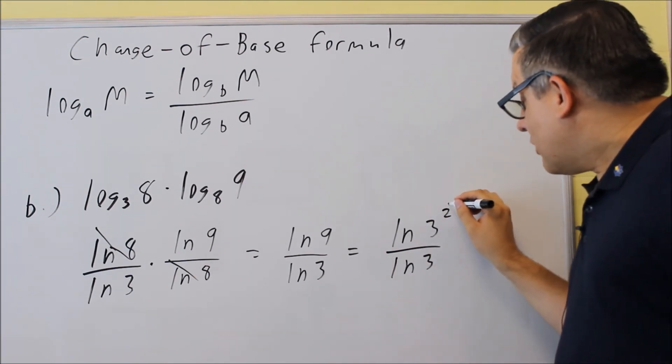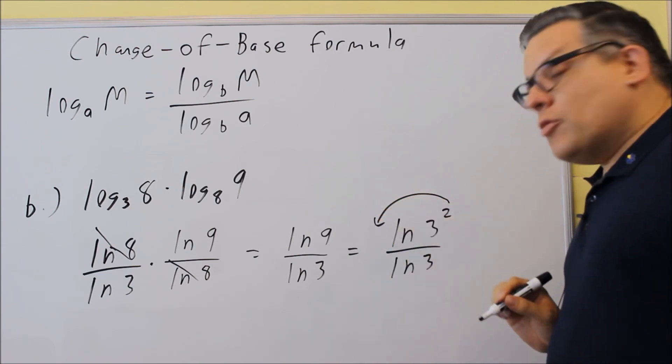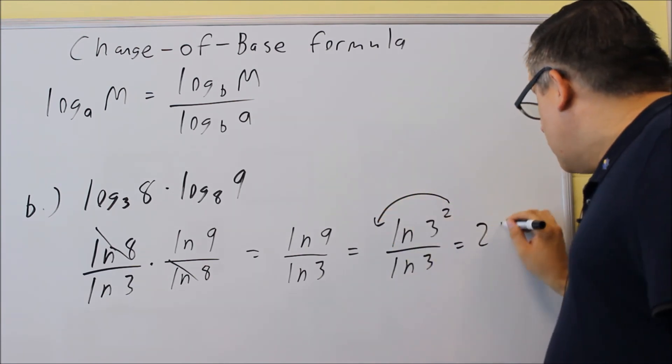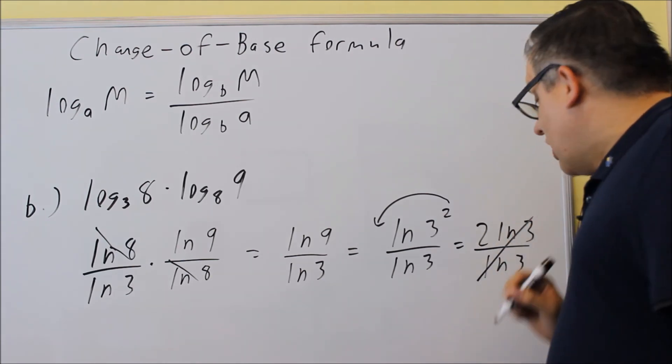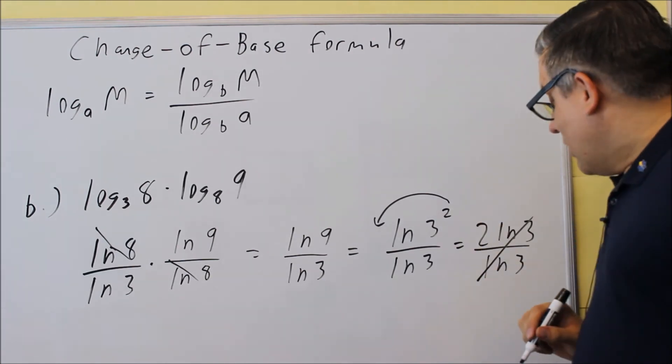My log properties say that I can take this exponent and I can move that down in front. So I get 2 natural log of 3 and I have natural log of 3 on the bottom. And then those cancel out and I'll get 2 as my answer.